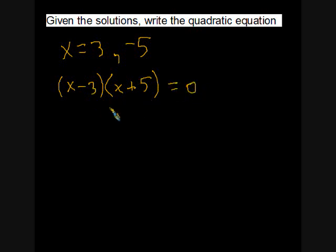If you recall from the last discussion of zero product property, if we have something times something and it equals zero, then either the first thing equals zero or the second thing equals zero. So let's take a look and see how did I come up with x minus 3 for solutions of x equals 3 and x equals negative 5.